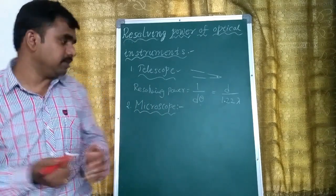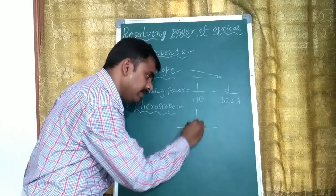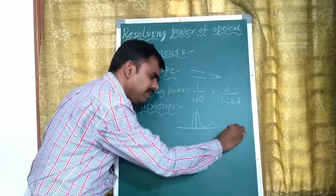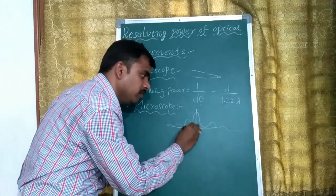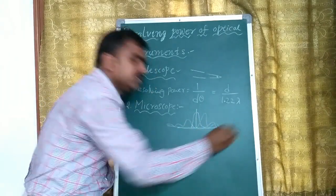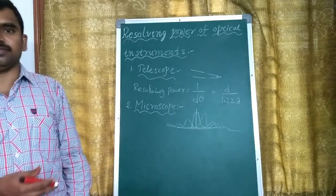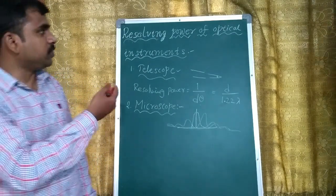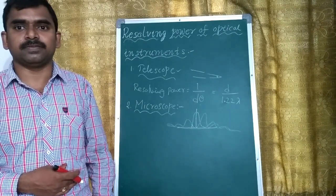Two objects are very close and we want to see them as separate. For this, the device must satisfy the limit of resolution, and the principle to be applied is Rayleigh's principle — that is, the maximum intensity of the first image should coincide with the minimum intensity of the second image, and vice versa. These are the topics for resolving power of optical instruments.